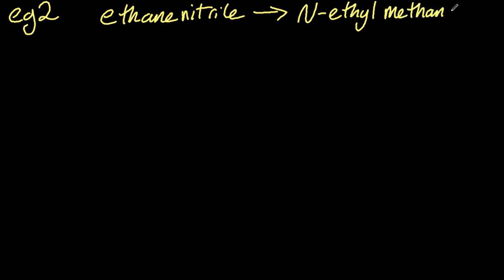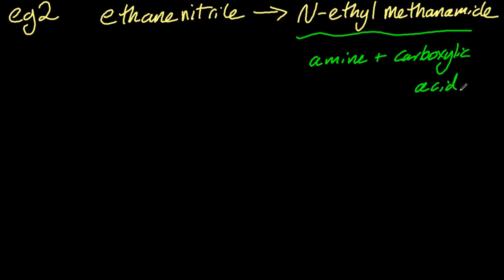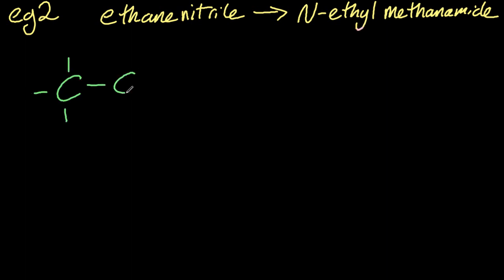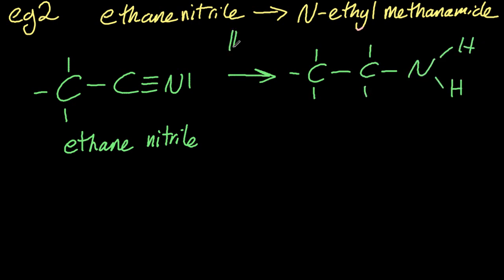Example number two. Well I have to start making these ones up because that was the only one in the syllabus. Example one, let's say ethane nitrile to N-ethyl methanamide. Oh that looks nasty. All righty, let's start out by realizing the only way to make that chemical is with an amine and a carboxylic acid, that's the only way the IB tells you how to make it, so that's the final step. It's going to have to be an amine and a carboxylic acid. All righty, step one, why not just make this amine, same as before, hydrogenation, nickel catalyst, and that's ethylamine.